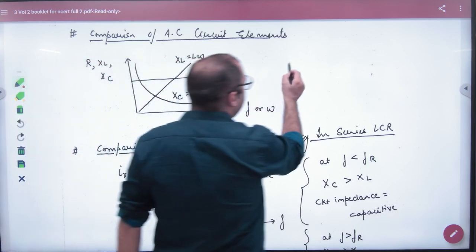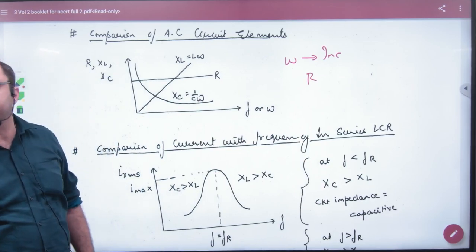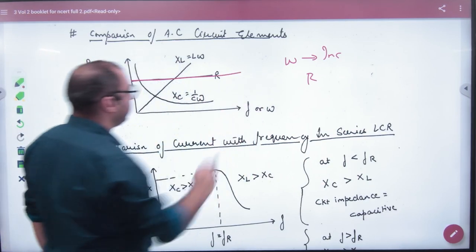If you increase or decrease omega, resistance shows no difference because it is independent of omega. So what will be the graph? A straight line.